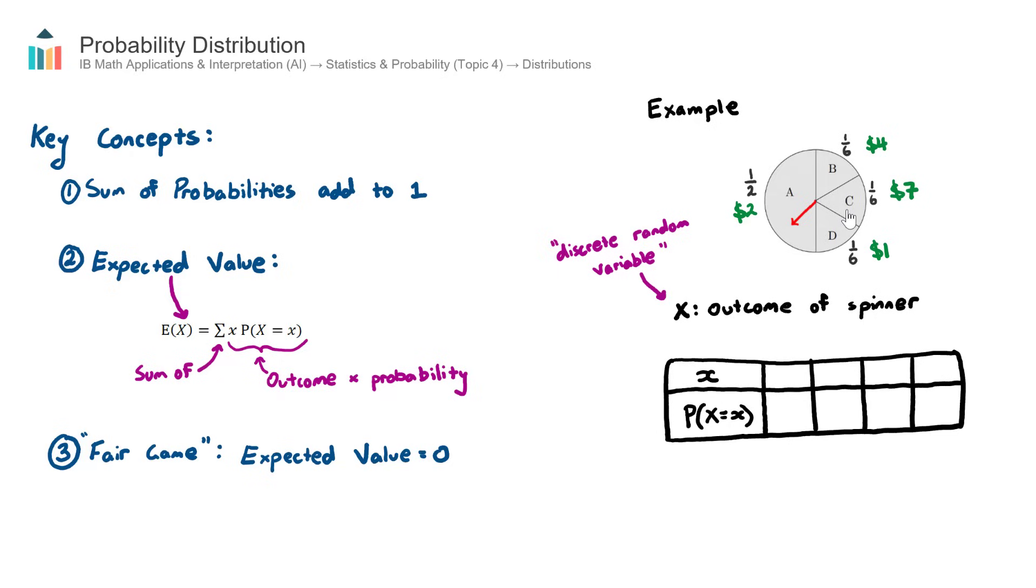Let's go ahead and create a probability distribution table for this spinner. In order to do that, we need to understand the concept of a discrete random variable. That sounds a bit intimidating, but it's really not. Random variable means a variable that is random and it varies. So in other words, your spinner will vary depending on how hard you spin it, and we have a random outcome.